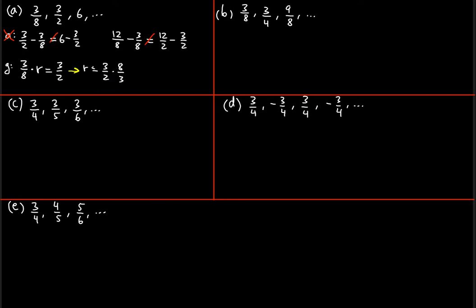The threes cancel out, leaving 8/2, which is 4. So the common ratio r is 4. Now let's check this ratio between the second and third terms: if 3/2 times 4 equals 6, then this is geometric.